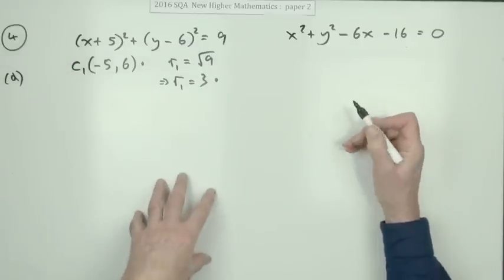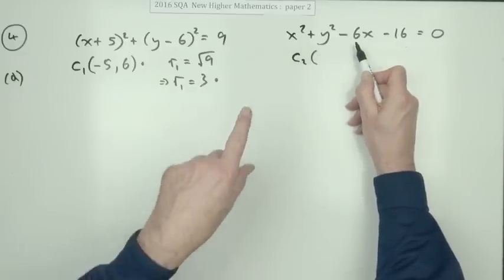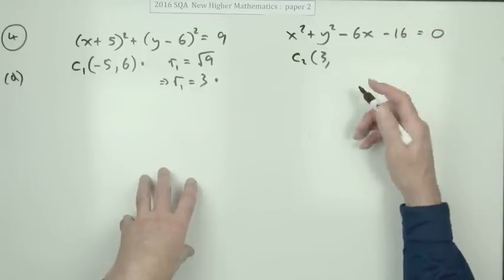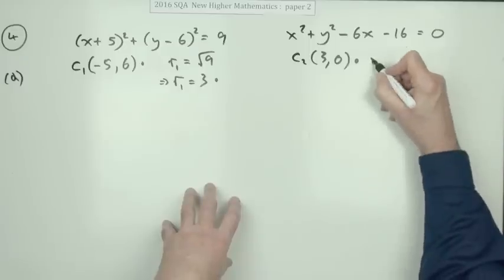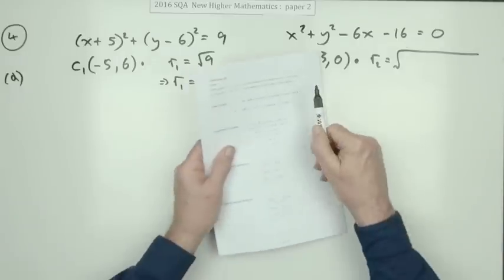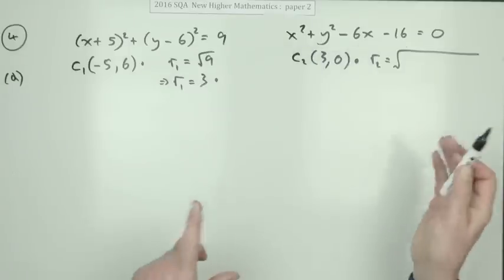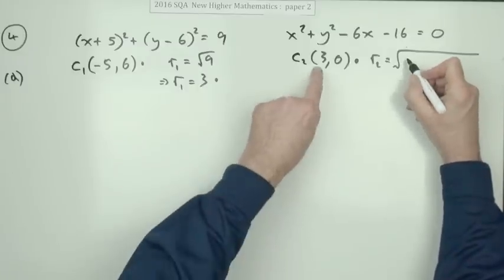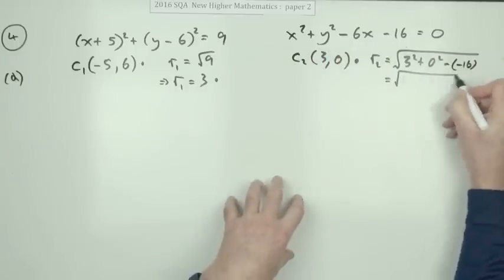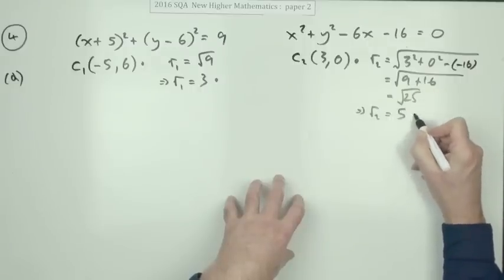For the second circle in expanded form, those numbers have been doubled. The center is found by halving the coefficients: half of six is three. There's no y term, so the y coordinate is simply zero. That's a mark. The last mark requires a little calculation: using g² + f² − c from the formula sheet — since g and f are just the coordinates of the center, that's three squared plus zero squared, giving nine plus sixteen, so the square root of twenty-five, meaning r2 is five.